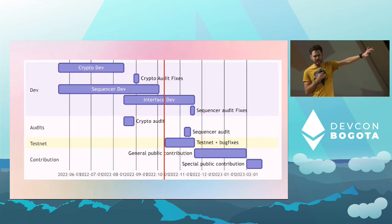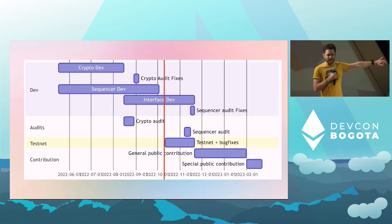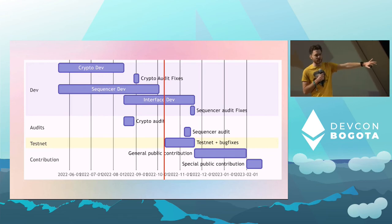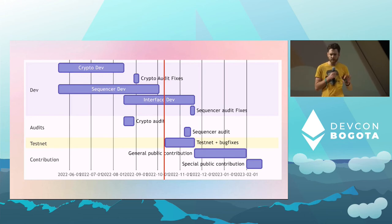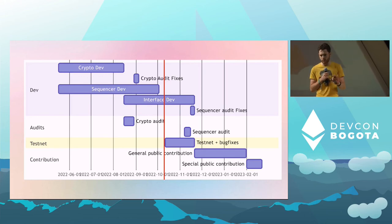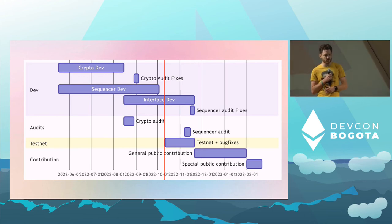This very complicated chart shows what's happening. All you need to know is that for danksharding and EIP-4844, this is all part of the 'surge' phase of our scaling.